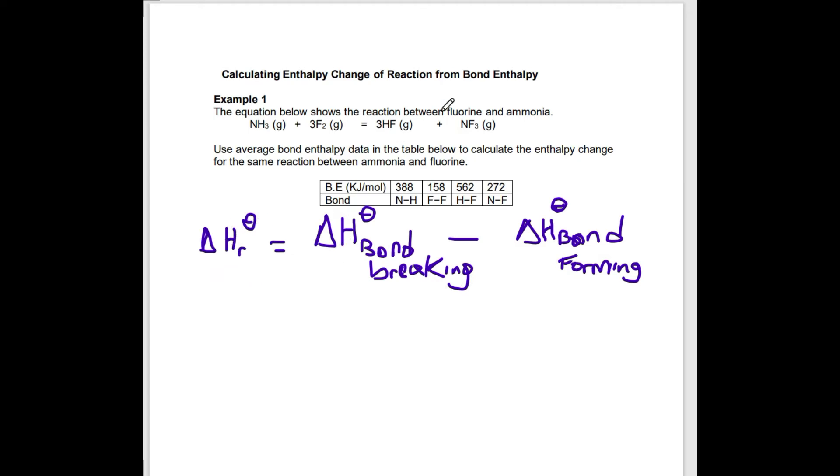One more thing before we go on: bond enthalpies are actually averaged values. For example, we see here an N-H bond has a bond enthalpy of 388 kilojoules per mole. That 388 kilojoules per mole is derived by looking at the bond energy of N-H in a number of different molecules—it is not specific to ammonia, for example.